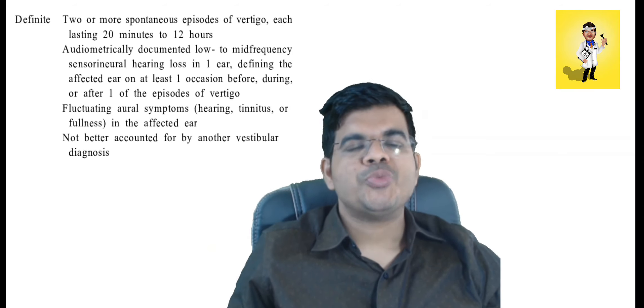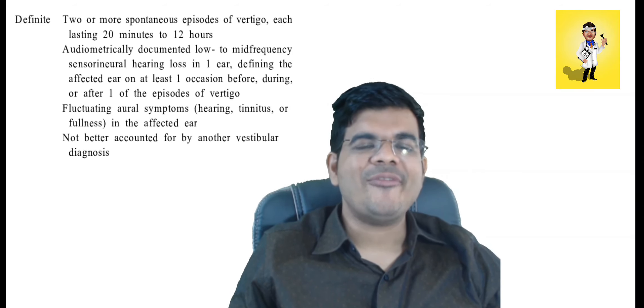And along with that there should be two or more spontaneous episodes of definitive vertigo that last for 20 minutes to 12 hours duration with features of fluctuating hearing loss, tinnitus or aural fullness in the ear.